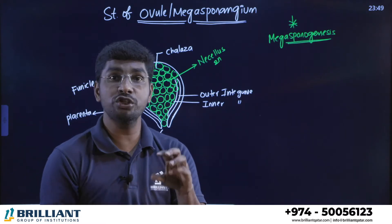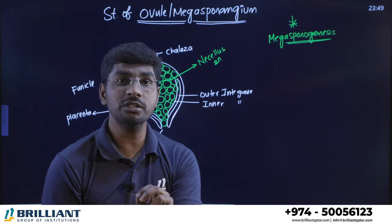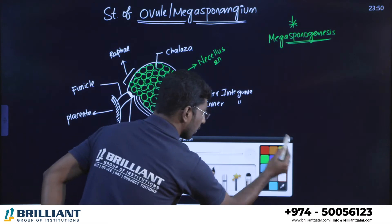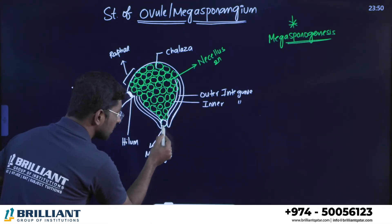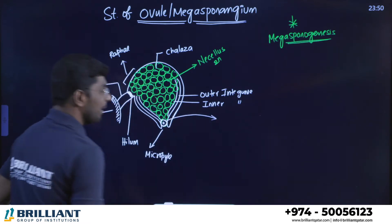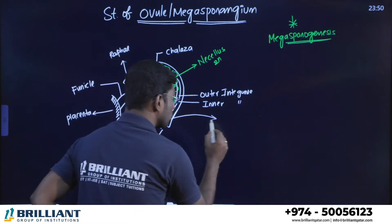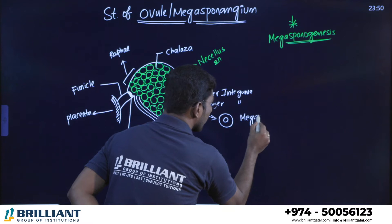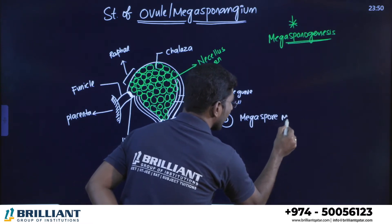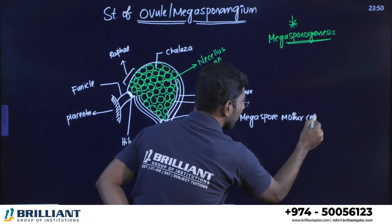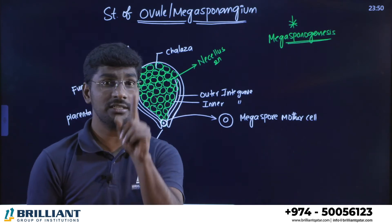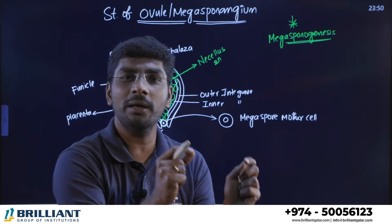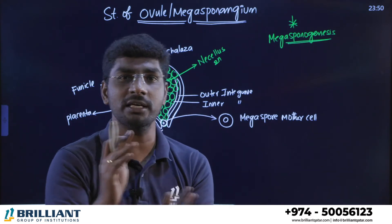One nucellus tissue cell — specifically the cell towards the micropyle end — starts to mature and behaves like a mother cell. This cell, which is towards the micropyle end and is a diploid nucellus cell, undergoes maturation to form the MMC, which stands for Mega Spore Mother Cell.